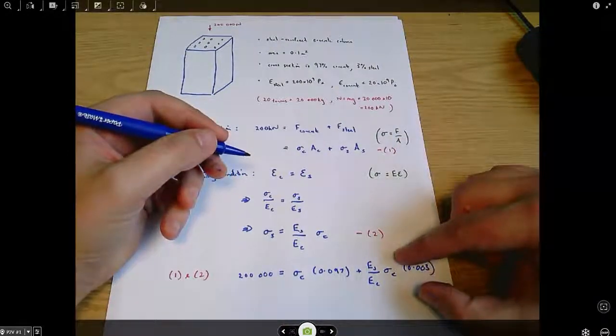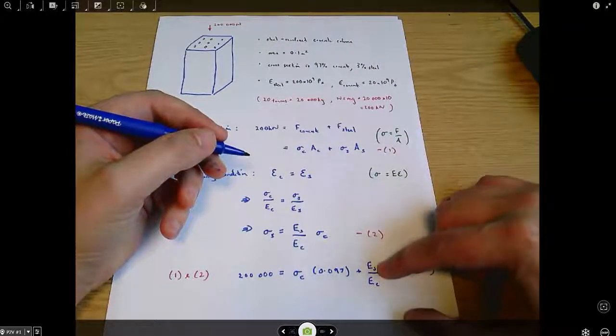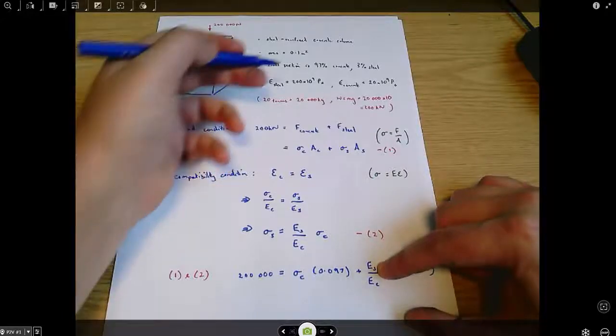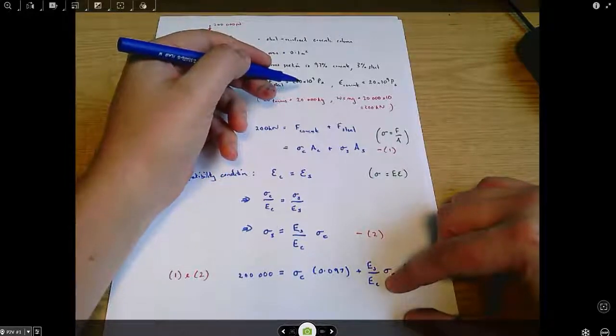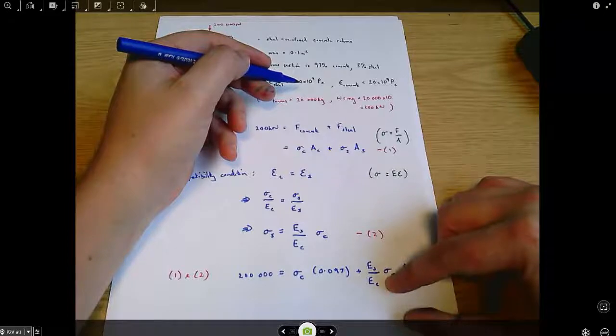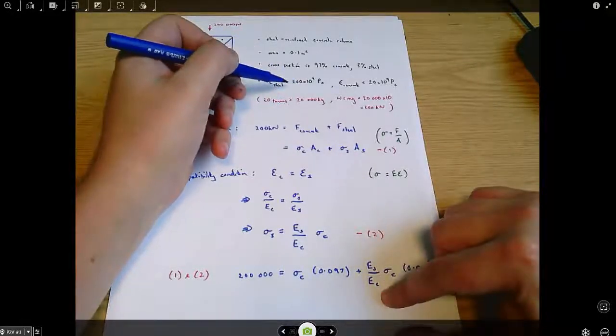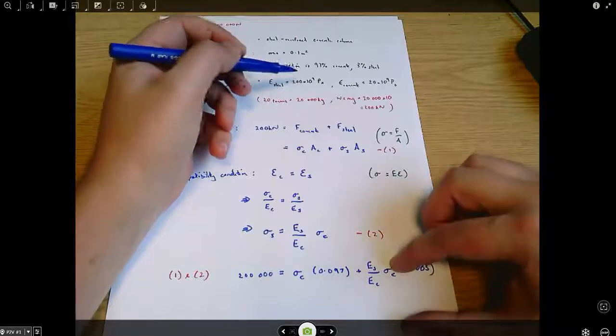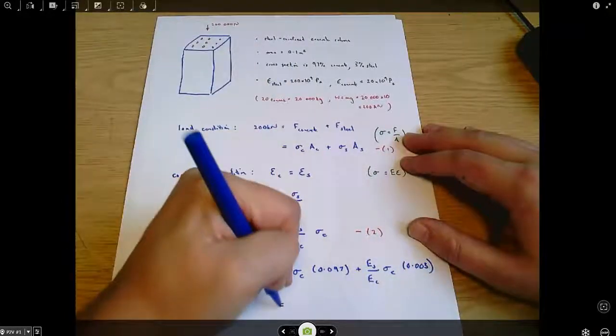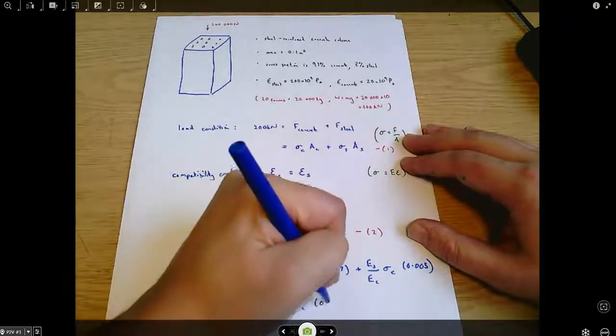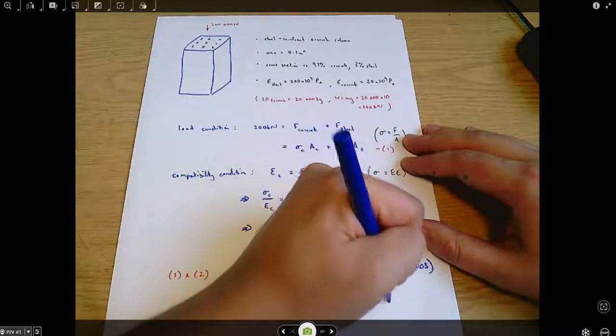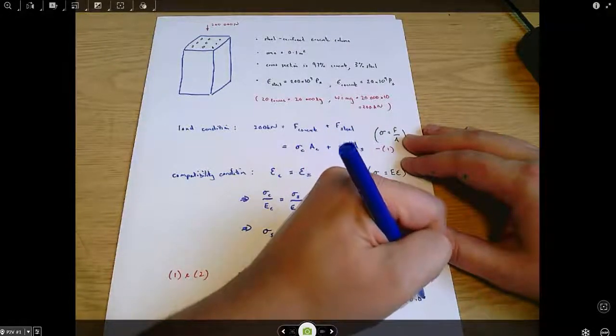And finally, we know the Young's modulus of steel is 10 times greater than the Young's modulus of concrete. So Es over Ec, just from this information up here, is going to be 10.